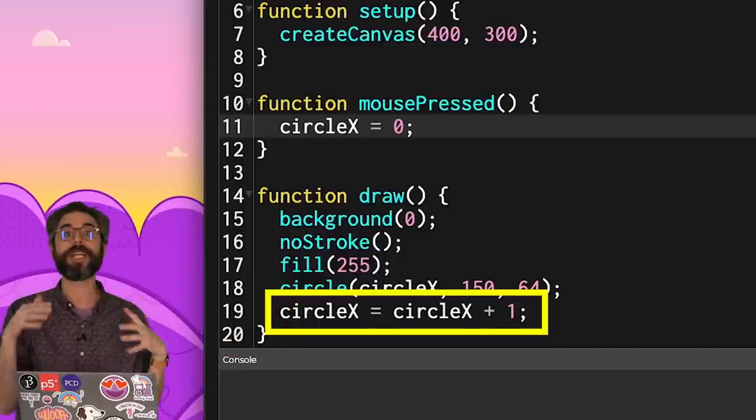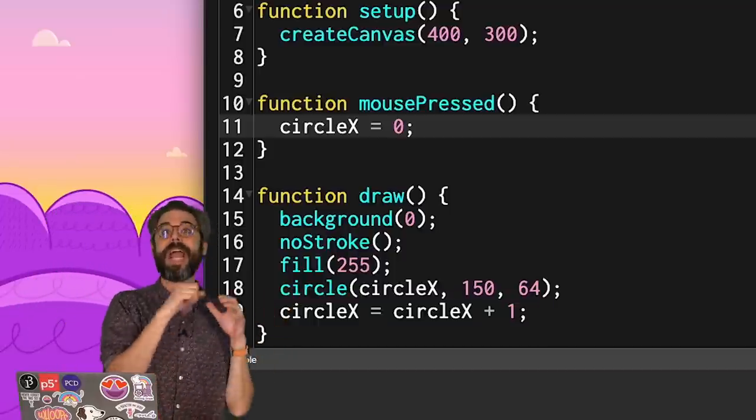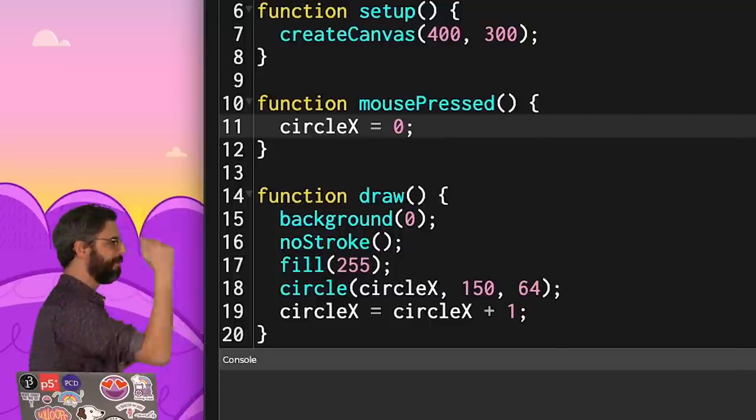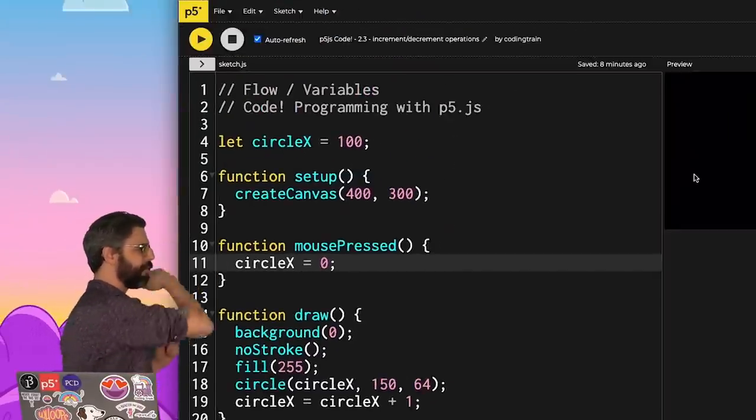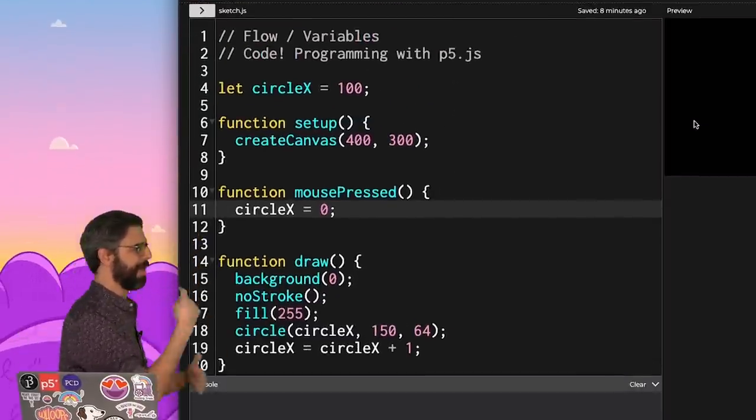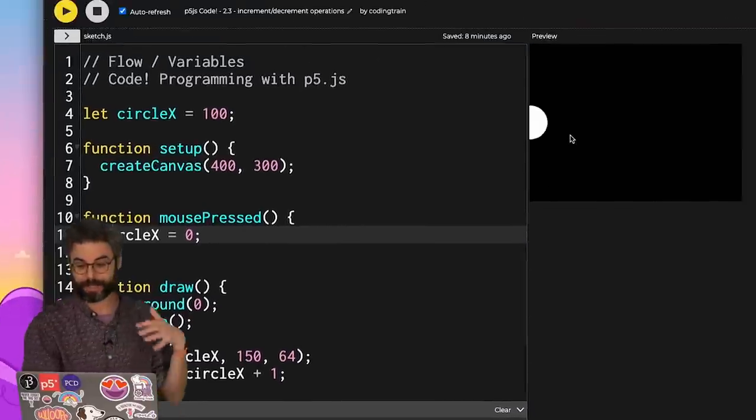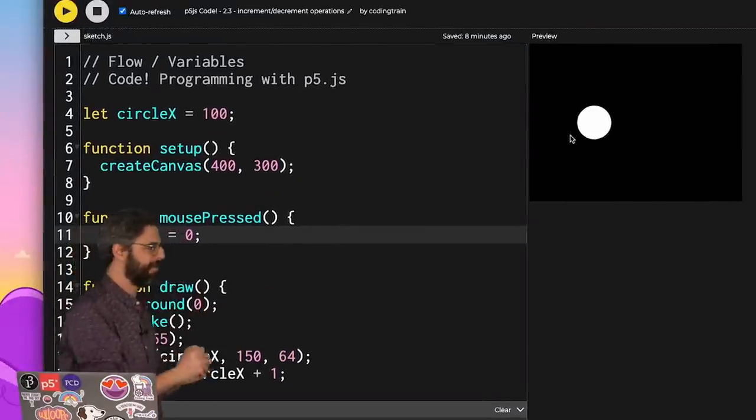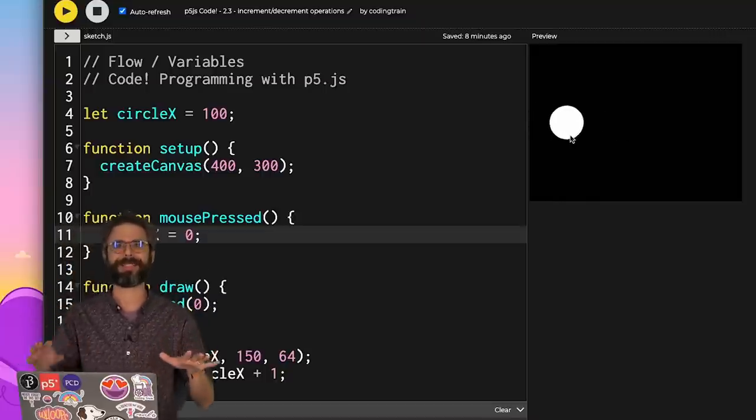So this was the first step in learning how to declare and initialize and use your own variables. The variable called circleX, I set it to an initial value of 100. And then every frame, I add 1 to it. And so we get this illusion of it moving across the canvas. If I click the mouse, I reset it back to 0.